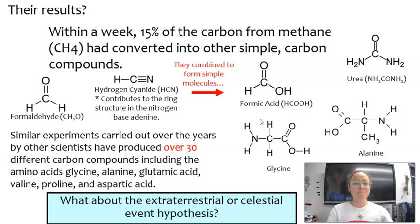Since Miller and Urey, other scientists have carried out similar experiments and they have produced over 30 different carbon compounds, including the amino acids glycine, alanine, glutamic acid, threonine, proline, and aspartic acid. This was the first experiment to show that we can have organic molecules form on early Earth.